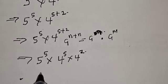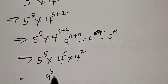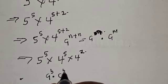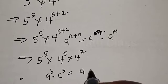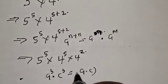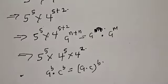Remember also: if you have a raised to power B multiplied by c raised to power B, that is the same as the quantity a multiplied by c, all raised to power B.